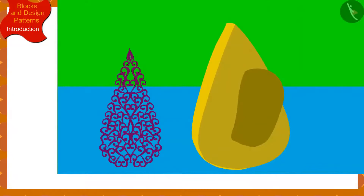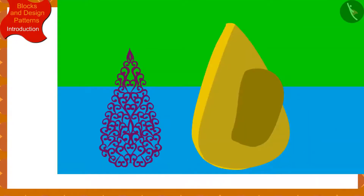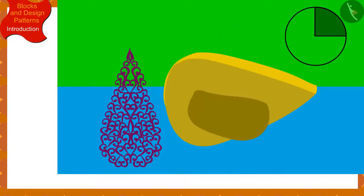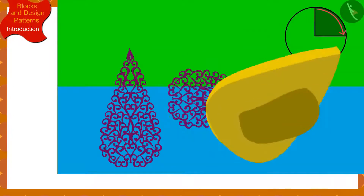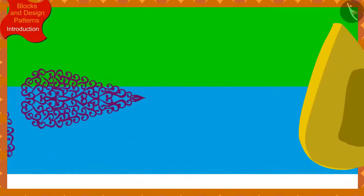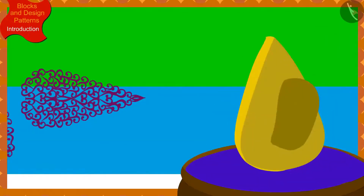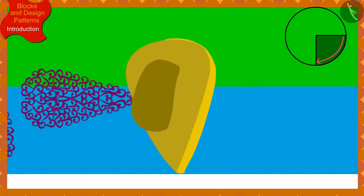She then made a second impression by dipping the block in the box of color again, this time rotating the block a quarter in the clockwise direction. Banno continued to make the design on Chanda's sari in this way, every time dipping the block in the box of color and rotating it a quarter from the previous impression.